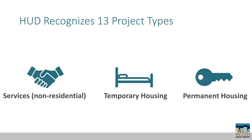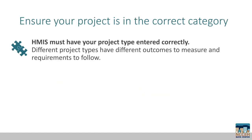HUD recognizes 13 project types within three categories: services that are non-residential, temporary housing, and permanent housing. We will go a little deeper into these three categories and the project types that are common in our HMIS implementation. HMIS must have your project type entered correctly. Different project types have different performance outcomes to measure and requirements to follow.